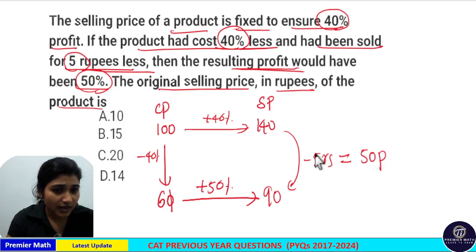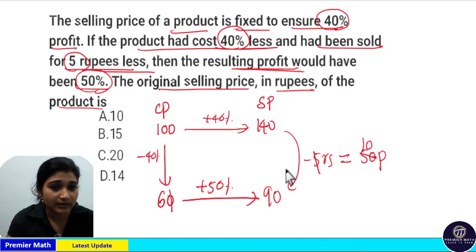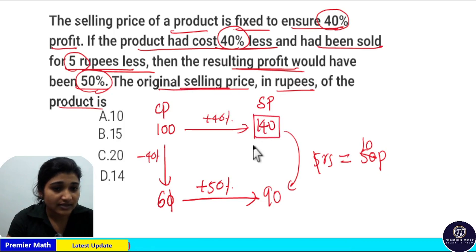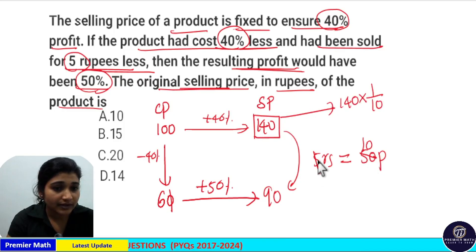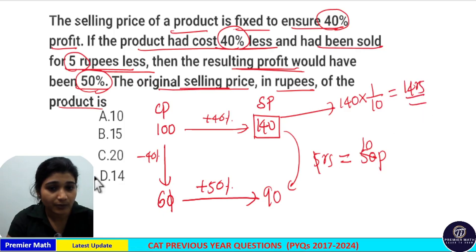Since 5 goes 10 times into 50, 10 parts represent 1 rupee, meaning 1 part equals 1 by 10 rupees. The original selling price was 140 parts, so 140 into 1 by 10 equals 14 rupees. So option B is your answer.